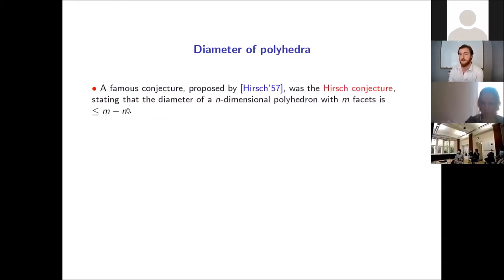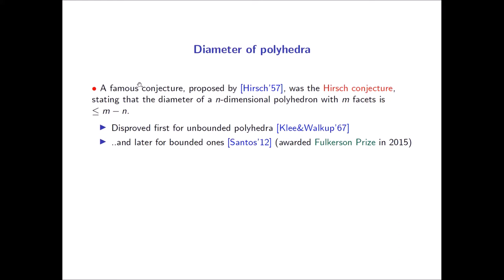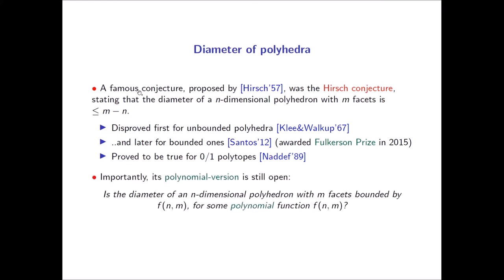The most famous conjecture in this realm was the Hirsch conjecture, which stated that the diameter of an n-dimensional polyhedron with m facets is at most m minus n. It was believed true for a long time and proven for many nice classes of polyhedra. It was first disproved for unbounded polyhedra, then disproved in general in 2012, but it was proved true for zero-one polytopes. Importantly, the polynomial version — whether some polynomial function of m and n bounds the combinatorial diameter — is still open.